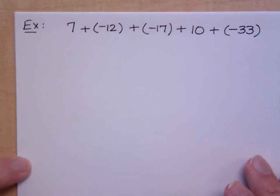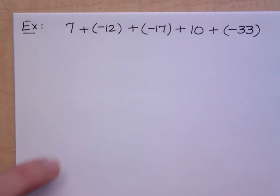Okay, there we go. Sorry, there we go. We've got 7 plus negative 12 plus negative 17 plus 10 plus negative 33.